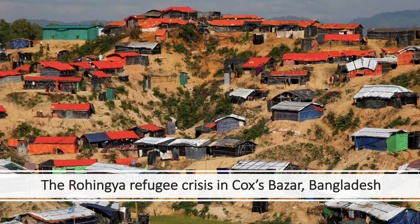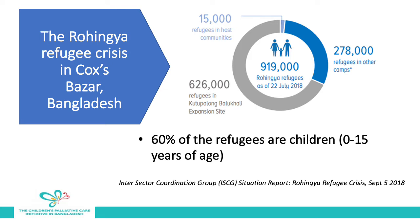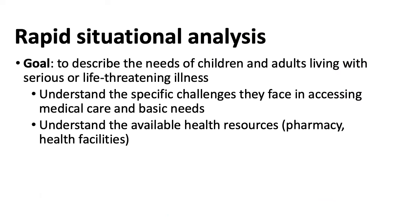This refugee crisis began in 2017 when almost 900,000 refugees arrived from Myanmar. They were fleeing violence and arrived in a remote area on the border in Bangladesh, and more than 60% of these refugees were children. At the end of 2017, we had a big challenge in that we didn't know about the individuals with serious illnesses and what their palliative care needs were. So we decided to conduct a rapid situational analysis, and our goal was to describe the needs of children and adults living with serious or life-threatening illnesses, to understand the specific challenges they faced in accessing medical care, their basic needs, and how available health resources — including pharmaceutical and health facilities — were able to support them or not.